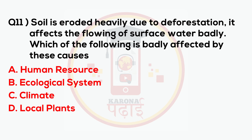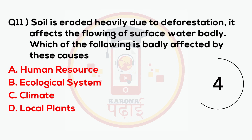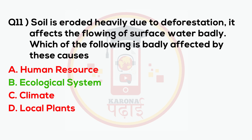Soil is eroded heavily due to deforestation and it affects the flowing of surface water badly. Which of the following is badly affected by these causes? The answer is the Ecological System.